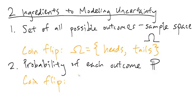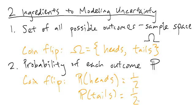We have probability of heads equals one-half, and the probability of tails is also equal to one-half.